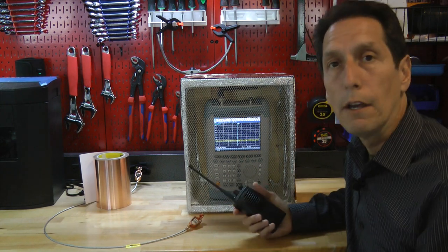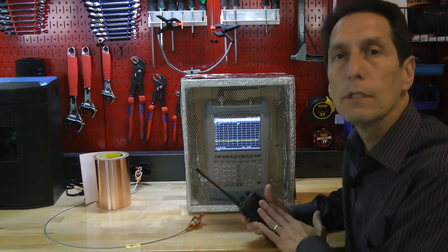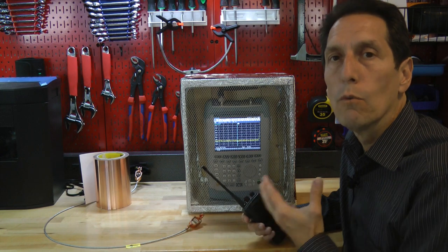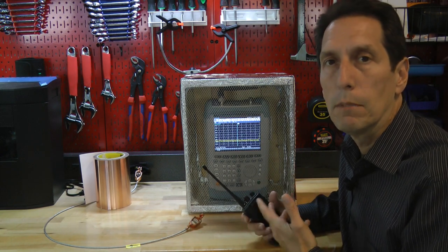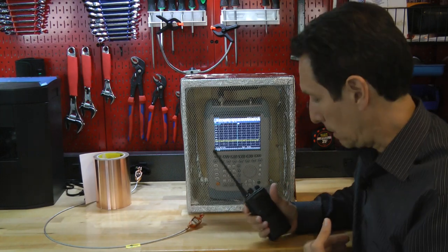I'm going to use a two-way radio to act as the source of the RF energy. Now, I know it's not the same as an EMP, but it runs at about 460 megahertz, which is right in the sweet spot of the high-frequency energy of an EMP. It's a pretty good representation of how well this grounding would affect the system.